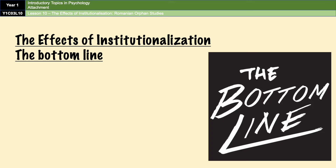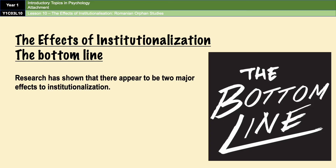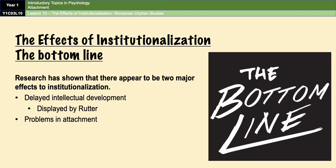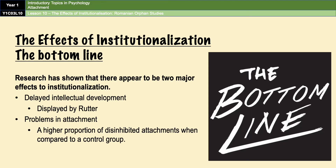In terms of the effects of institutionalization, research has shown two major effects. First, delayed intellectual development as shown by Rutter: IQ drops the later children were adopted, though the delay appears reversible if adoption occurs before six months. Second, problems with attachment, as shown by both Rutter and Zena et al., with a higher proportion of disinhibited attachments compared to control groups, particularly in children adopted after six months. Rutter explained this as a product of living with multiple carers during the sensitive period of attachment and needing to form bonds with each of them for survival.